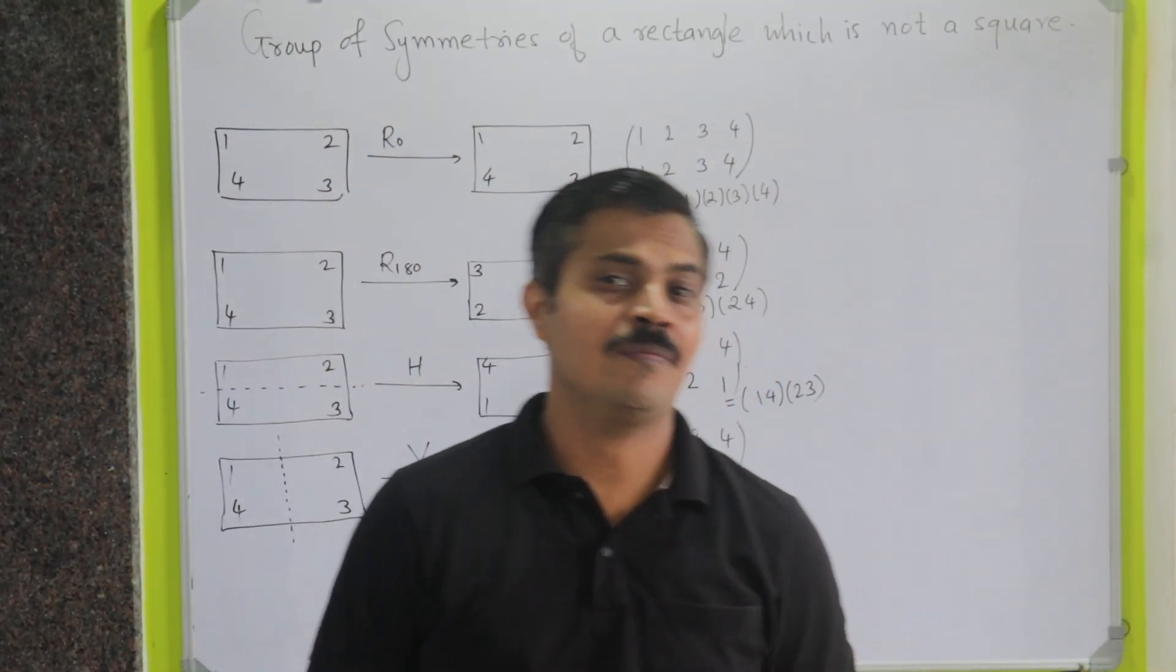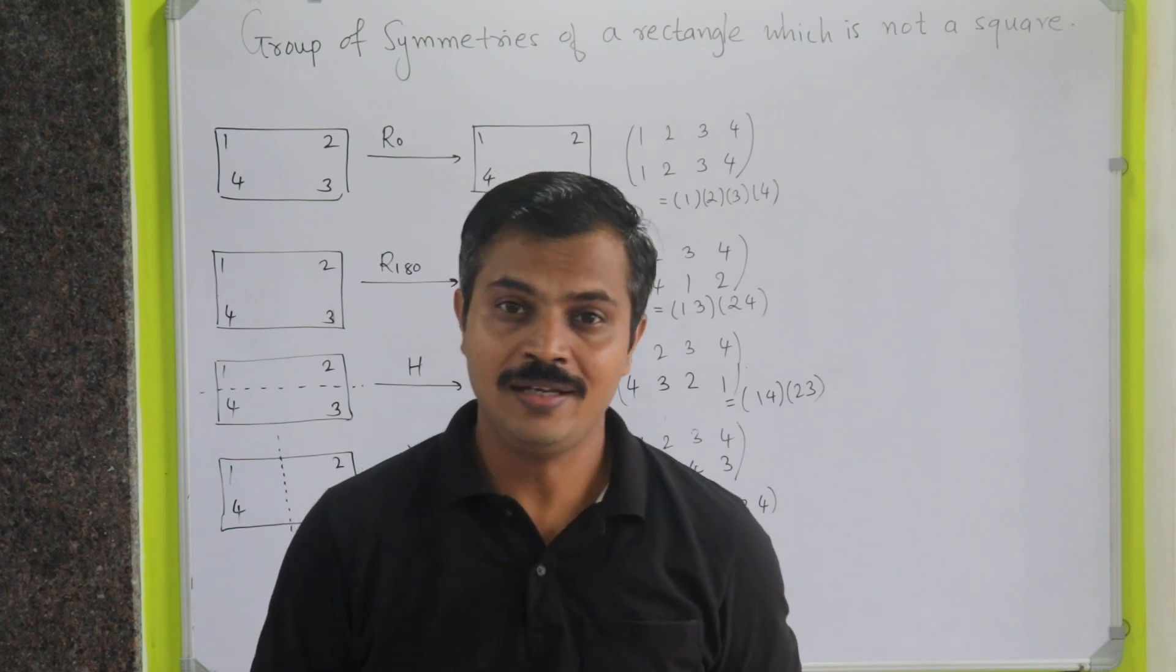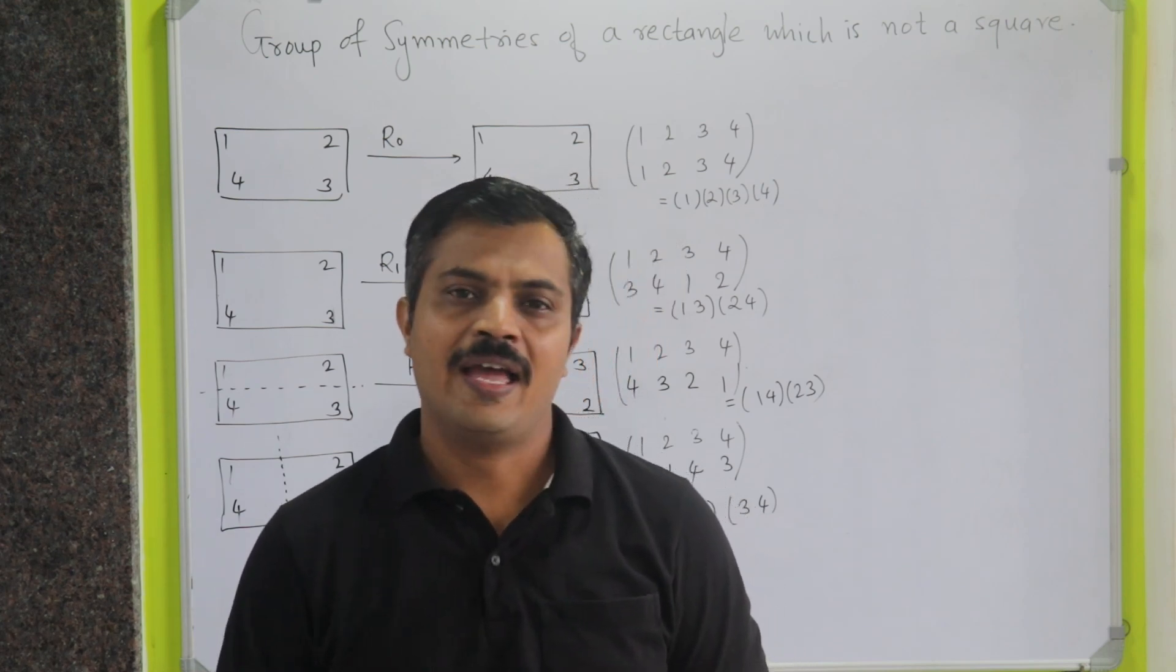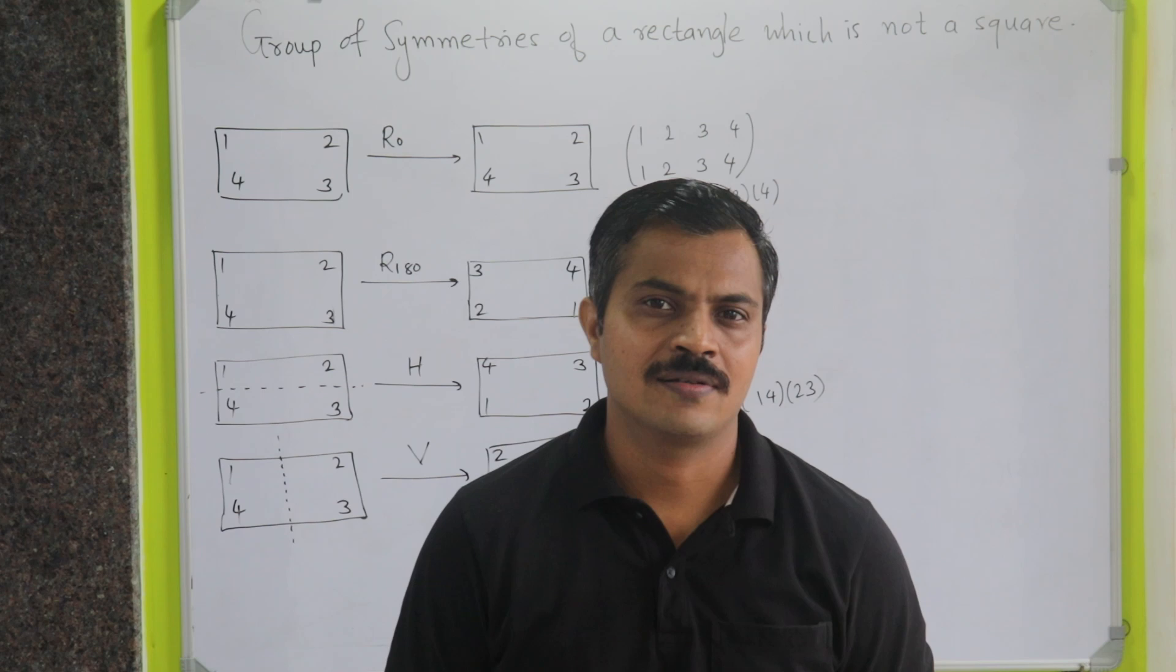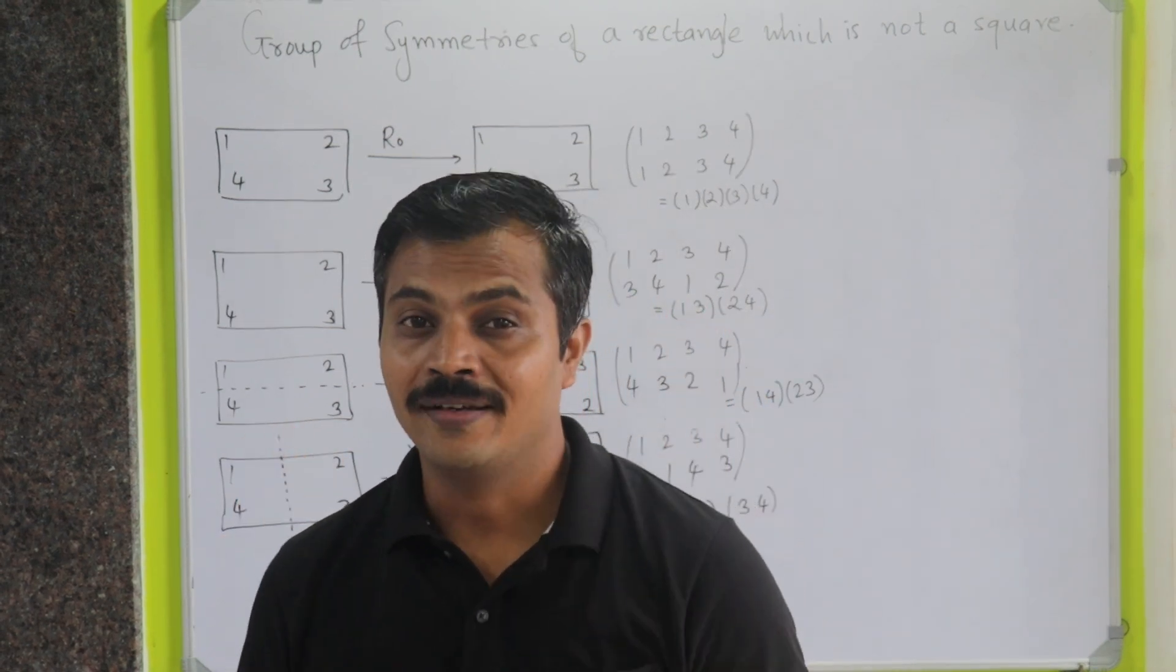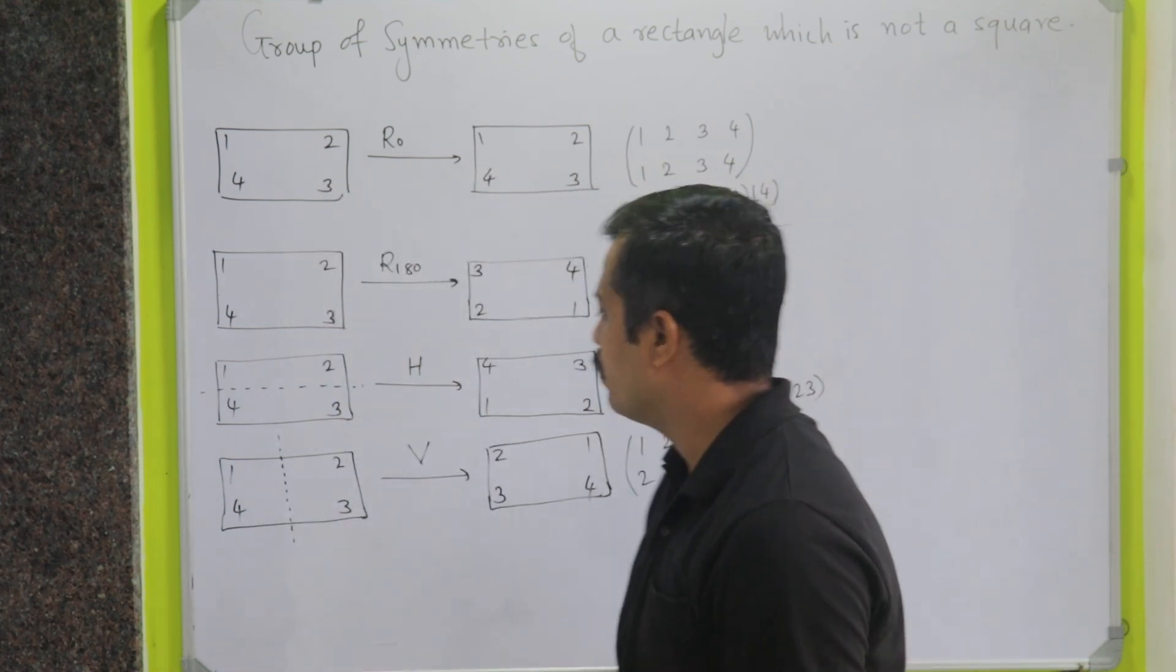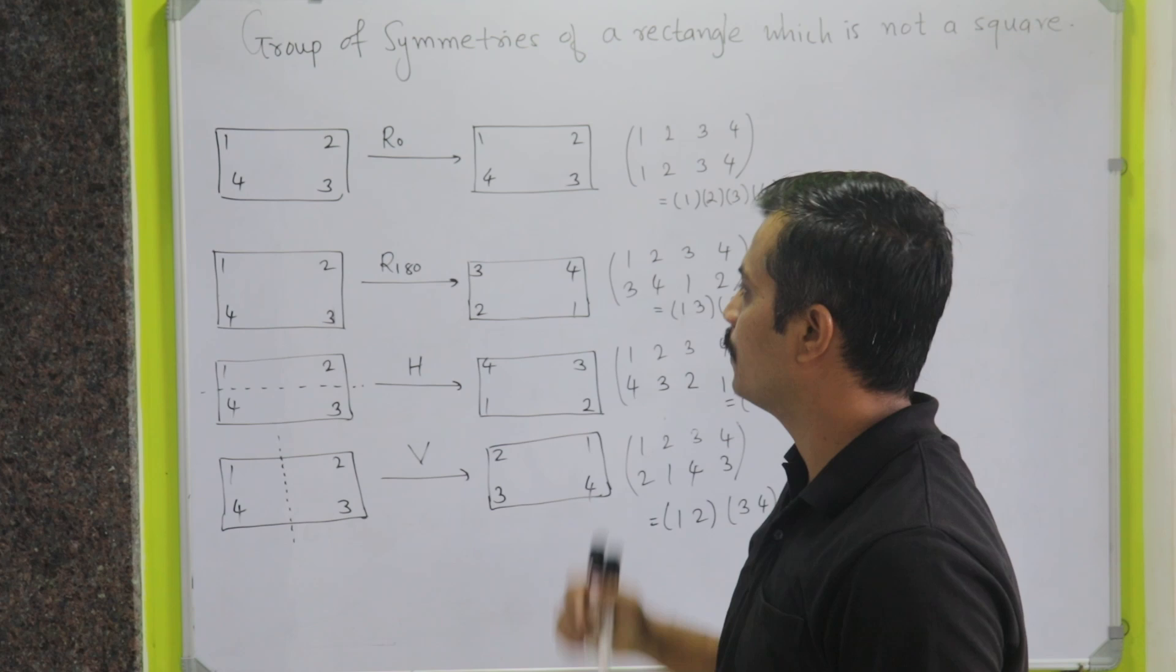In this class, we are going to talk about the group of symmetries of a rectangle which is not a square. As discussed in the previous classes, we can always find symmetries of a rectangle and the number of symmetries will be 4, which I have written on this side.